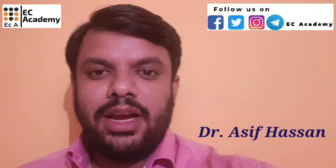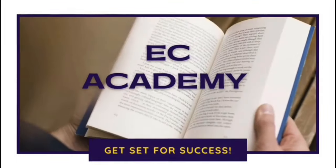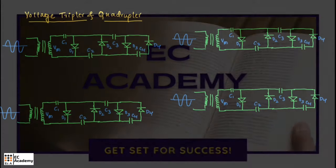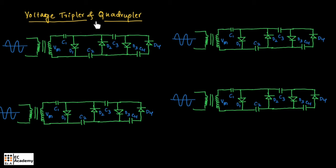Hello friends, welcome to ESEA Academy. In this lecture, let us understand voltage tripler and quadrupler. Voltage tripler means the output voltage will be 3 times the input voltage. Voltage quadrupler means output voltage will be 4 times the input voltage. This is the circuit which is used to produce the output voltage 2 times, 3 times or 4 times the input voltage.